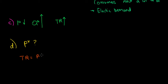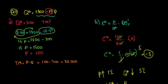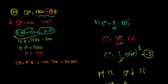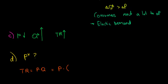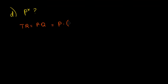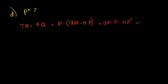The total revenue function is price times quantity: TR = P × Q. We know that quantity demanded equals 1800 minus 15P. So let's write that out: TR = P × (1800 − 15P). Let's open the brackets and write it as minus 15P² plus 1800P.